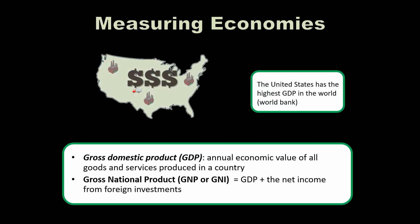Gross domestic product is the annual economic value of all goods and services produced in a country. Gross national income, or GNI, is the GDP plus net income from foreign investments. These are vocabulary words in the learning objectives. Sometimes when someone says less developed, moderately developed, or highly developed country, they don't necessarily refer to a specific index — they just mean certain qualities associated with that level of development.